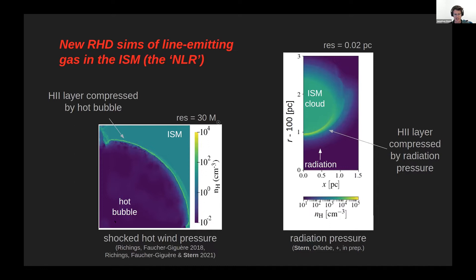In the case on the left, the emission line region is compressed by the hot bubble, while on the right it's compressed by the radiation pressure. So the structure of the NLR clouds or the line-emitting gas clouds is very different under different feedback assumptions, and therefore the predictions are also very different.